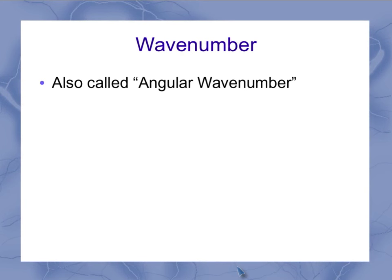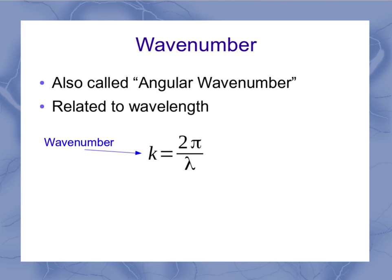Now, wavenumber, and this is also called the angular wavenumber, is related to this wavelength we've just been talking about. And the equation is this one shown right here, where k is our wavenumber. And it's equal to 2 pi over lambda, which is our wavelength. Now, this equation is very similar to how we define the angular frequency, 2 pi over the period, where the period is the time for one cycle, and the wavelength is the distance for one cycle.